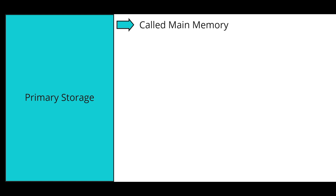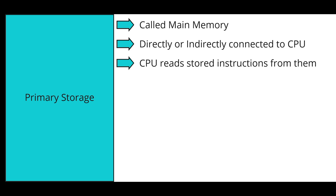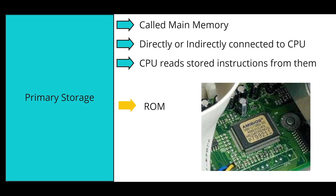Primary storage is also called main memory. It is directly or indirectly connected to the CPU, and the CPU reads stored instructions from it. The first type of primary storage is Read-Only Memory, or ROM. This memory is used as the computer begins to boot up. Small programs called firmware are often stored in ROM chips, and they contain instructions for performing basic operations required to operate hardware devices.